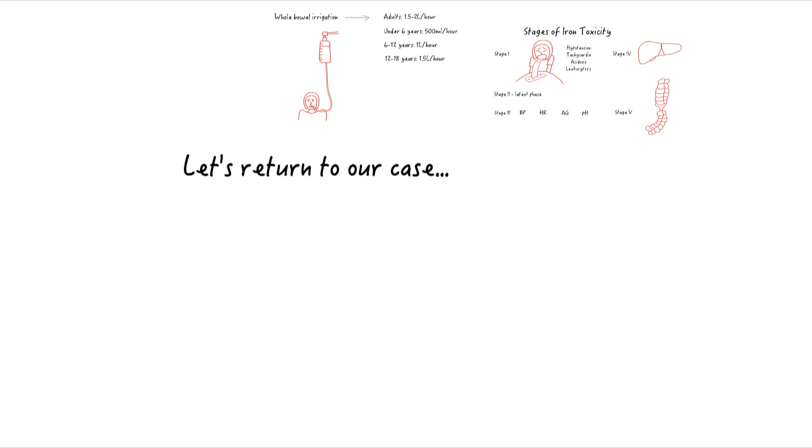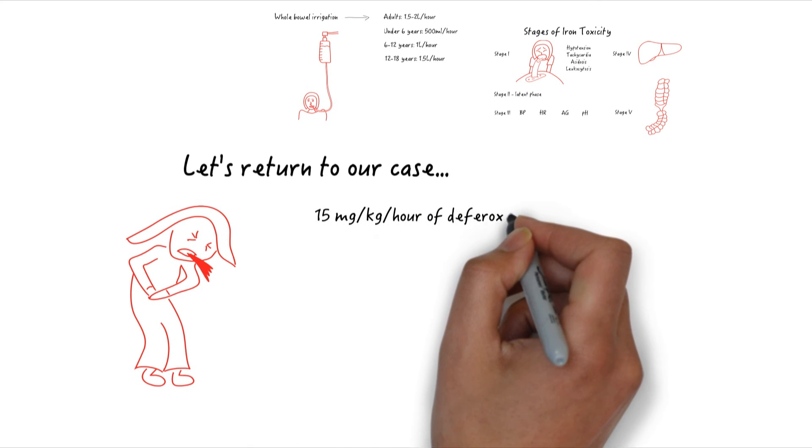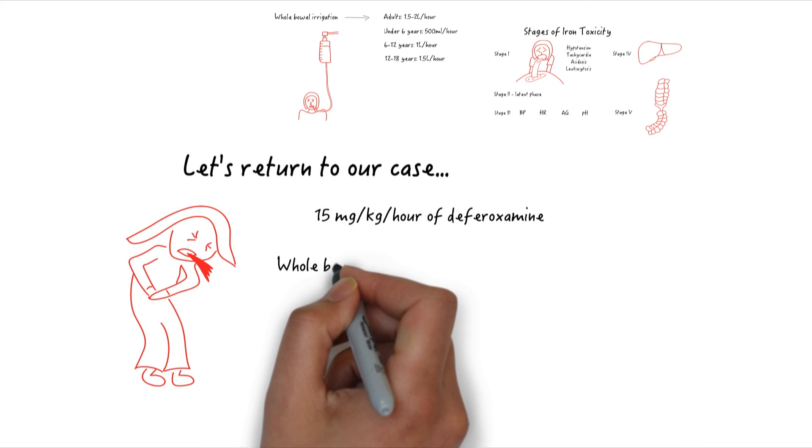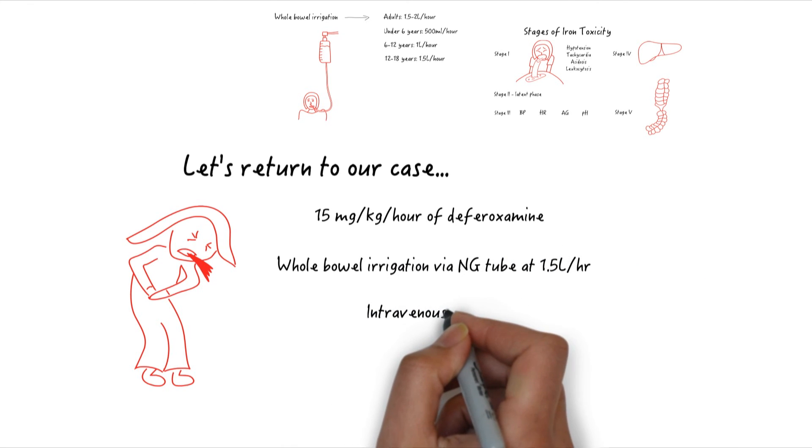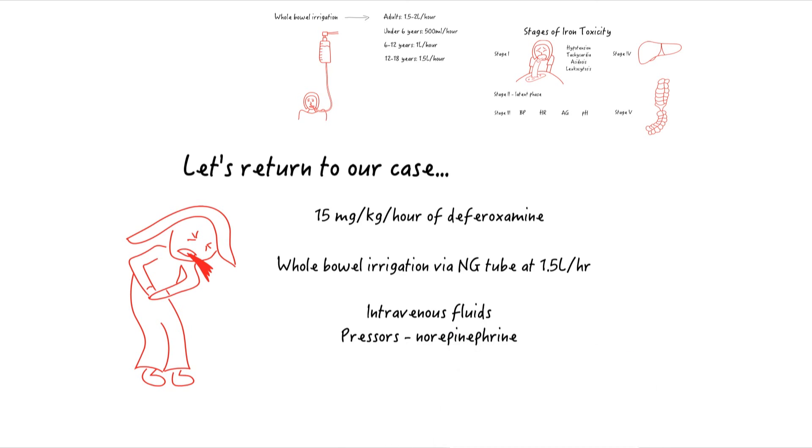Let's return to our case. The patient is started on 15 milligrams per kilogram per hour of deferoxamine and whole bowel irrigation via NG tube at 1.5 liters per hour. The patient developed some worsening hypotension in the ED, so was continued on IV fluids and started on norepinephrine. She was admitted to the MICU overnight, and the MICU team was able to increase her rate to 45 milligrams per kilogram per hour.